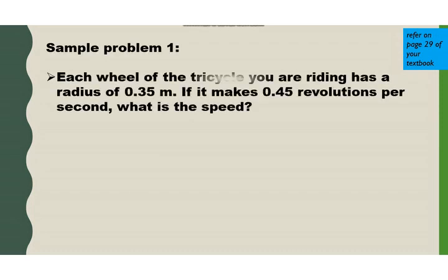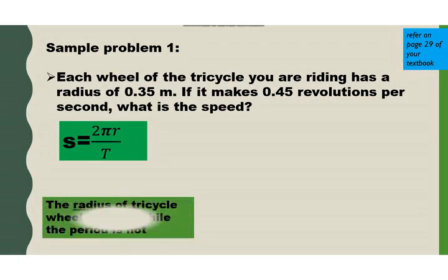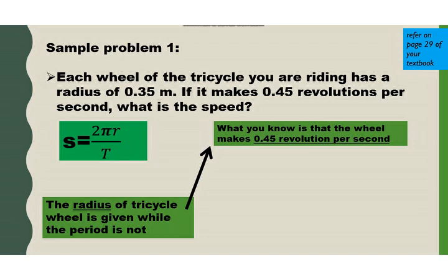Problem 1: Each wheel of the tricycle you are riding has a radius of 0.35 meter. If it makes 0.45 revolutions per second, what is the speed? The equation for speed is speed equals 2πr over period. The radius is already given as 0.35 meter, while the period is not directly given — what we know is that the wheel makes 0.45 revolutions per second. Remember that the period is the time it takes to make one complete revolution.